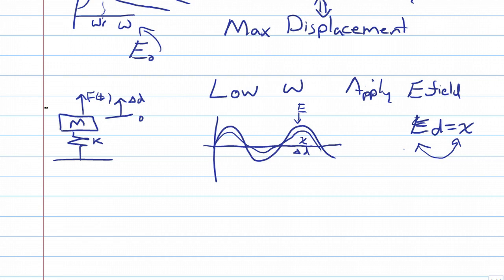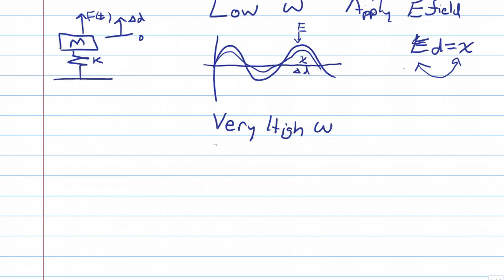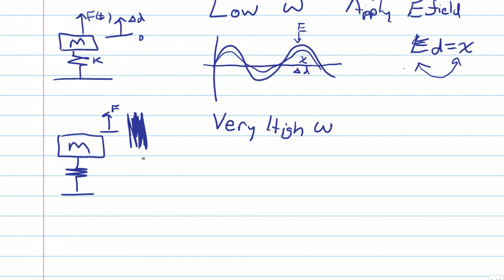Now take the other extreme: very high frequency. If we apply a force pulling up and down really fast, the displacement is essentially zero. The material doesn't even move because you're pulling and pushing so fast it doesn't have time to respond. As soon as it starts to move, you pull it back the other way — so the material cannot respond.